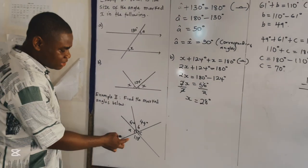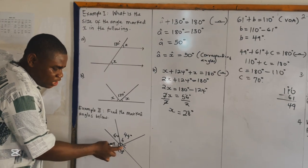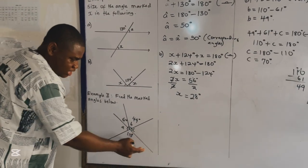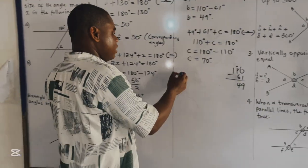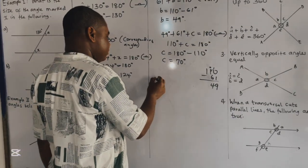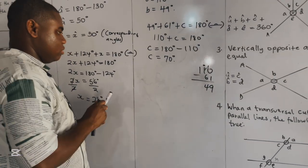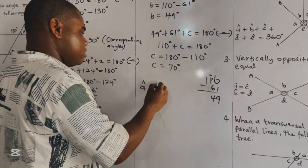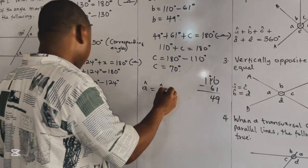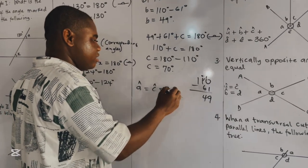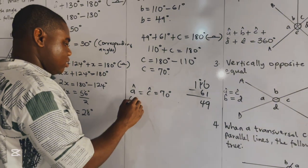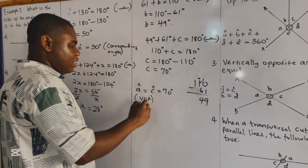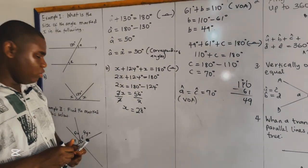We are left with angle A. In this case, A is vertically opposite to C because they form the X shape. Therefore, angle A equals angle C, which equals 70 degrees — vertically opposite angles are equal.